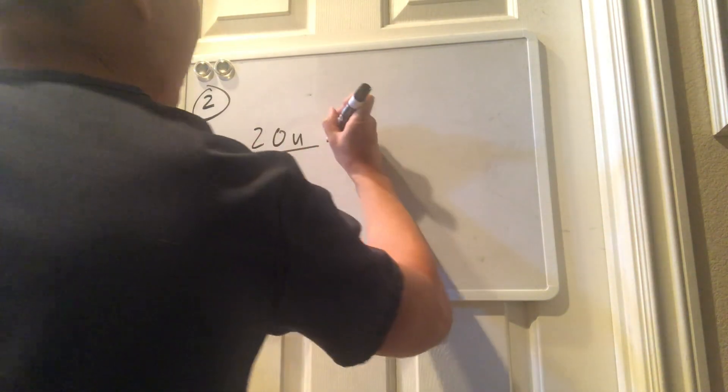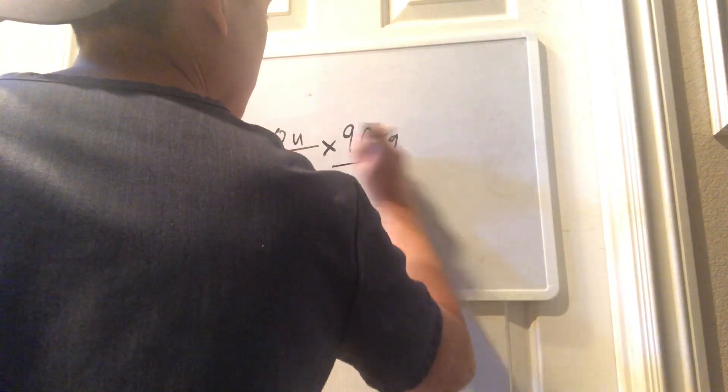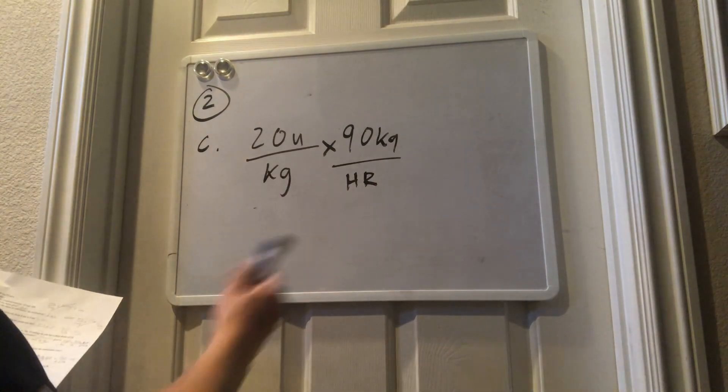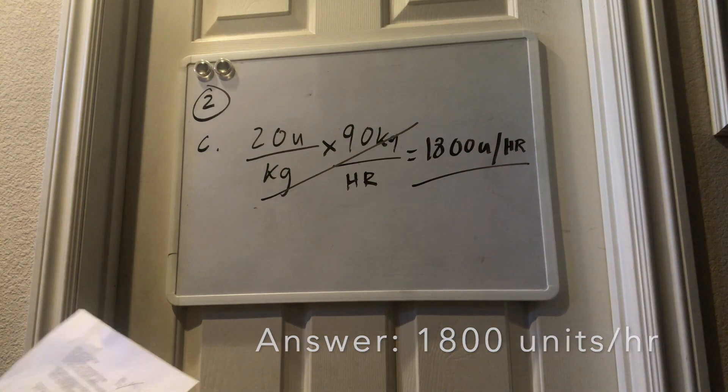and if you recall, the patient's weight was 90 kilograms. We put 1 hour on the bottom because what we want is units per hour. We cross the kilograms, and you should be left with 1,800 units per hour.